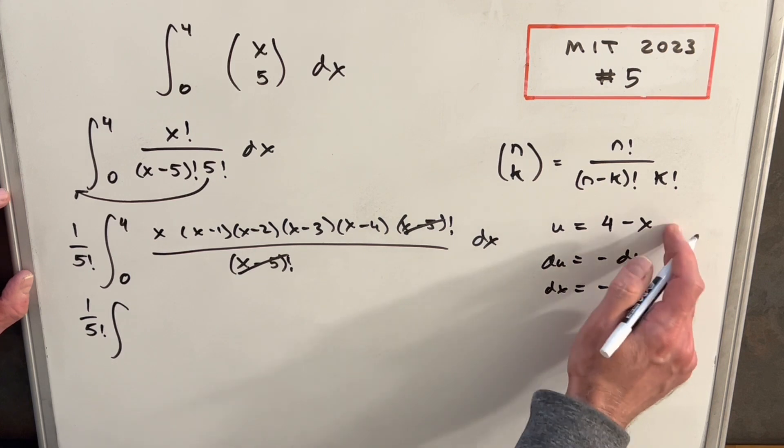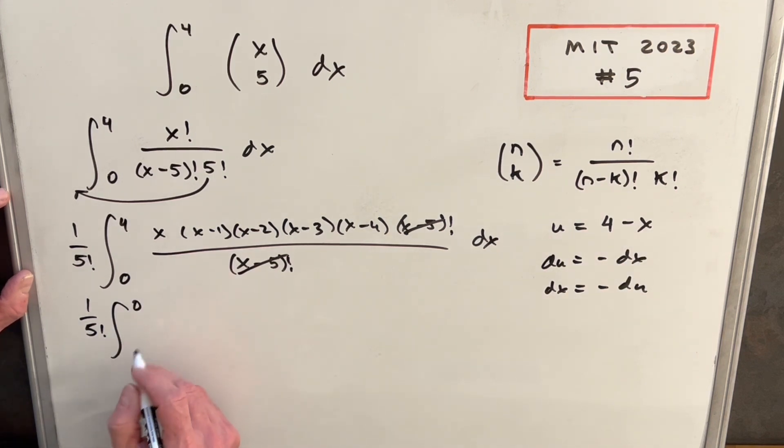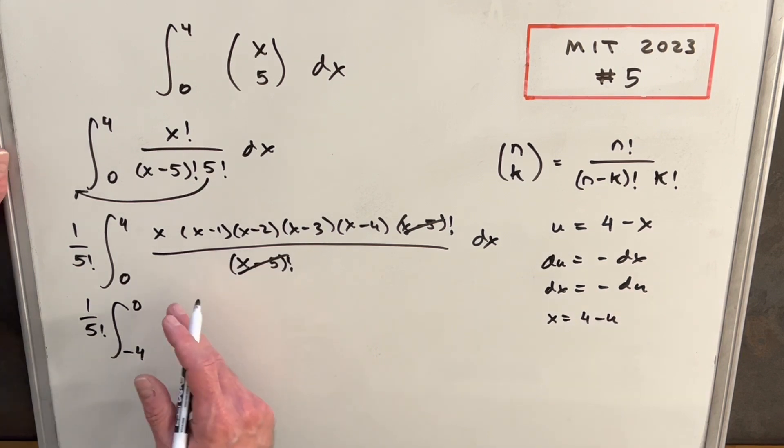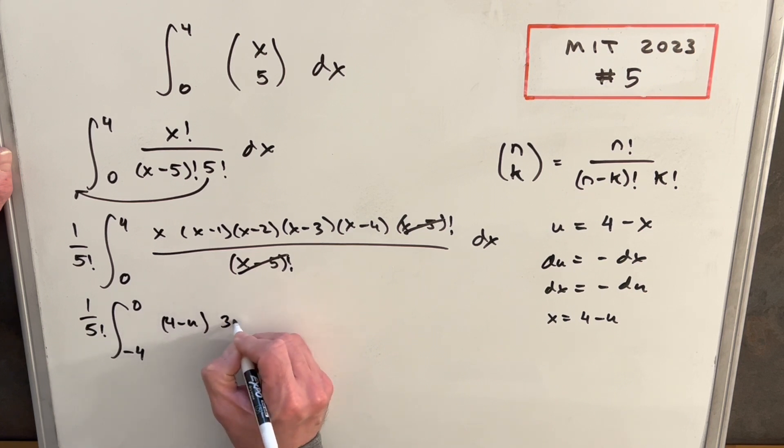Plug my 4 in here, and I have a 0 for my upper bound. Plug a 0 in, and I have a minus 4. And before I do all this, let's get a value for x. So x is gonna be 4 minus u. So then our first term, x, if x is 4 minus u, then x minus 1 is gonna be 3 minus u. And then we're gonna be just decreasing all the way to the last term.